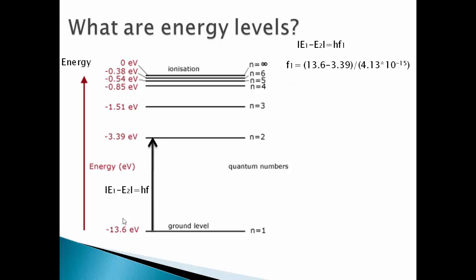To find that frequency we'll do energy level 1, 13.6, minus 3.39, divide by the value of Planck's constant in electron volts. Simplifying it we get the frequency as 2.47 times 10 to the power 15 hertz.